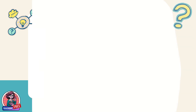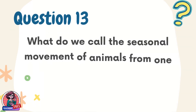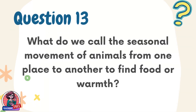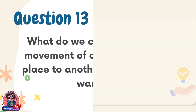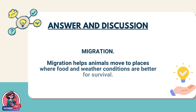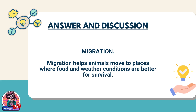Question 13. What do we call the seasonal movement of animals from one place to another to find food or warmth? Answer: Migration. Migration helps animals move to places where food and weather conditions are better for survival.